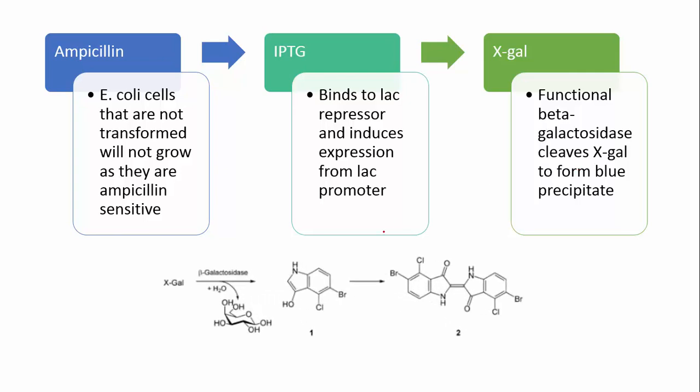X-gal is actually an analog of lactose. X-gal is cleaved by beta-galactosidase into 5-bromo-4-chloro-3-hydroxyindole, which then oxidizes to form 5,5'-dibromo-4,4'-dichloroindigo.